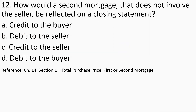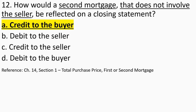Number twelve: A second mortgage that does not involve the seller — coming from a bank or lender instead — would be reflected on the closing statement as a credit to the buyer only, since the seller is not part of that arrangement.